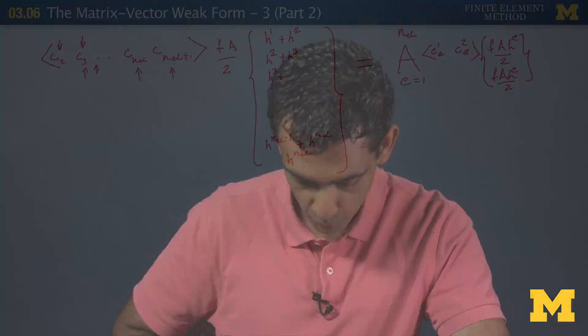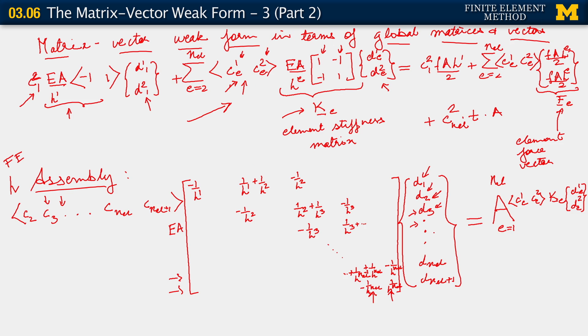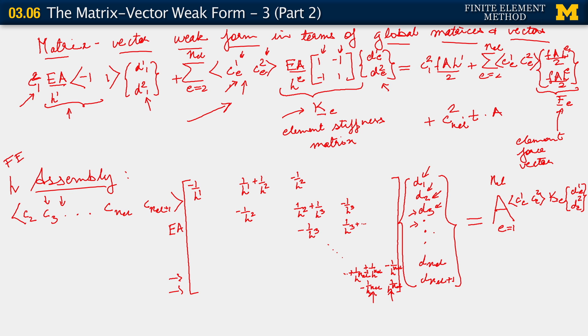Now there's one more contribution. If you go back and look at our finite dimensional weak form, you will observe that we have a term that comes from the traction condition. It's the one that we may have actually had on the previous slide as well. On the previous slide, it is this contribution that comes from the weighting function degree of freedom, C2 NEL.